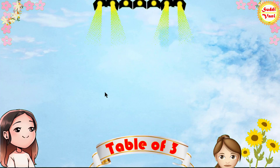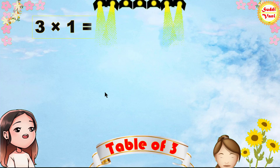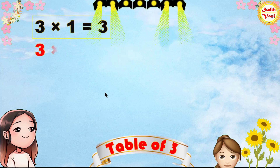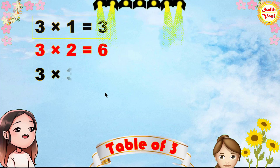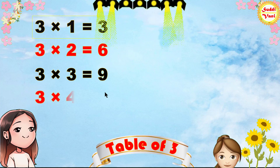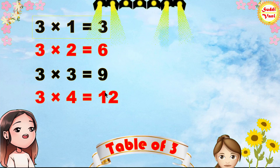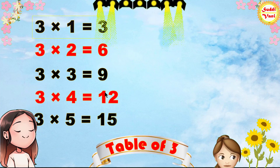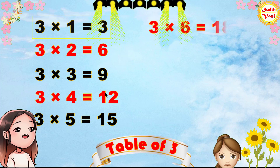Once again: 3 1's are 3, 3 2's are 6, 3 3's are 9, 3 4's are 12, 3 5's are 15, 3 6's are 18.